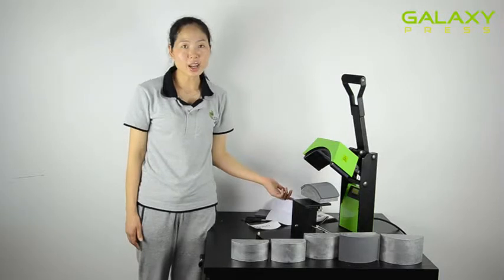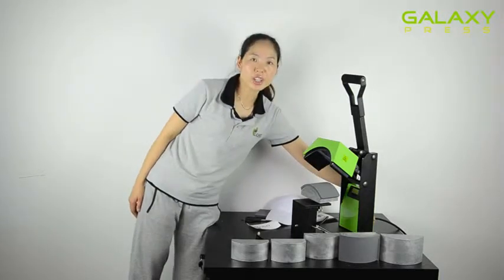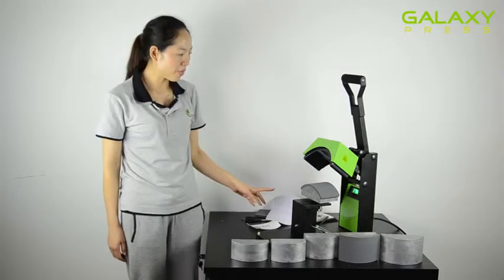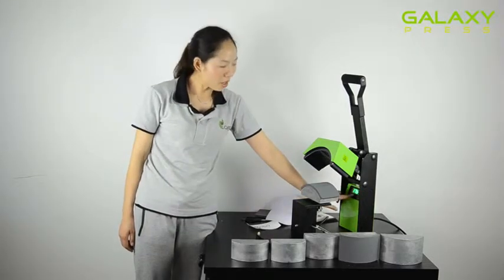First, we have to switch the machine on. The switch of the machine is located at the back of the machine. Switch it off, on, and press the set button.